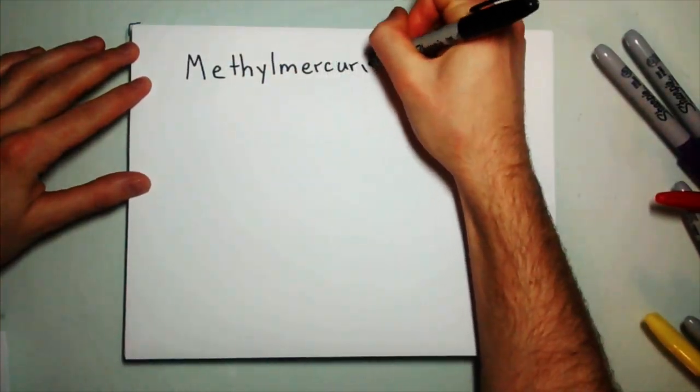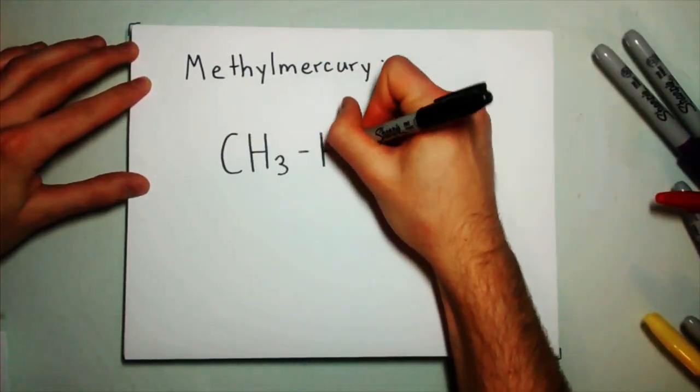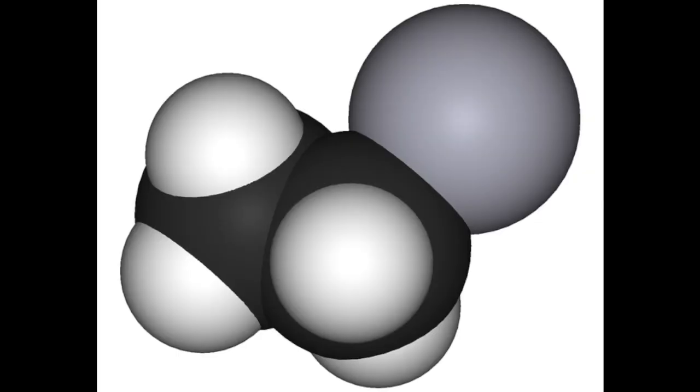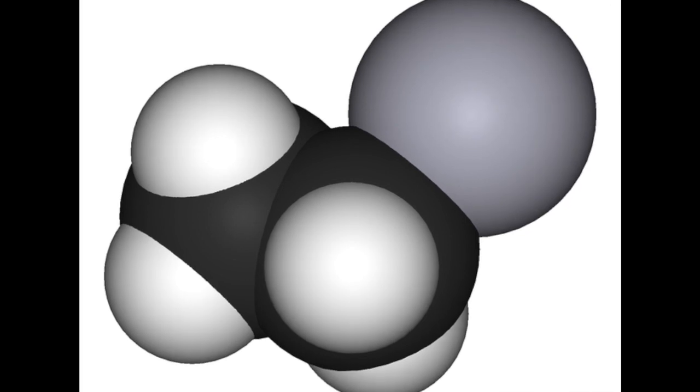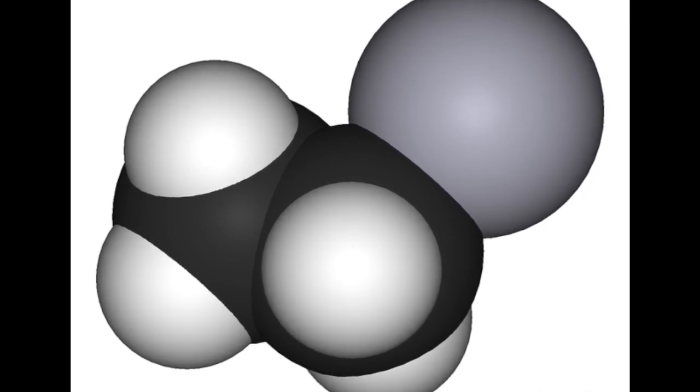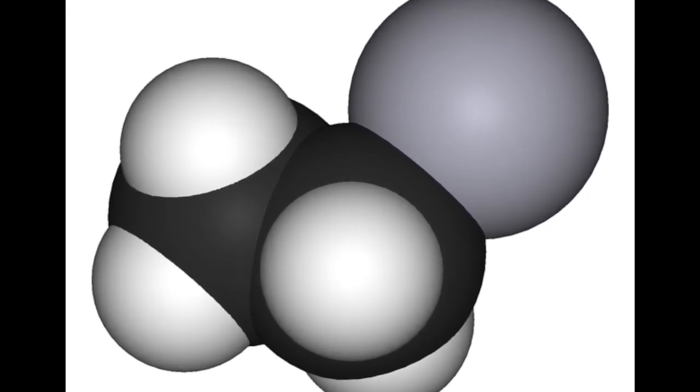Methylmercury is formed through interaction with anaerobic bacteria. Ethylmercury is a blanket term used to describe organic mercury compounds and is not known to bioaccumulate significantly due to its rapid excretion from the body.